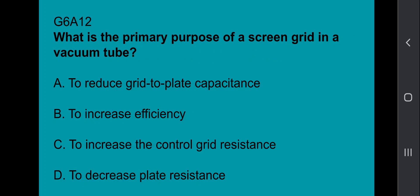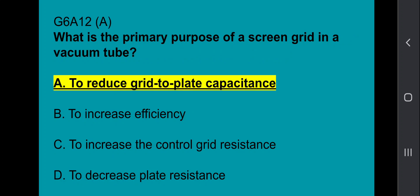G6A12: What is the primary purpose of a screen grid in a vacuum tube? To reduce grid to plate capacitance.